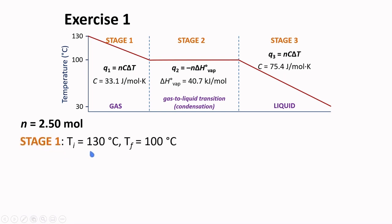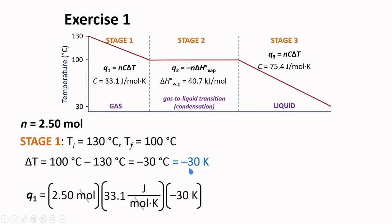For stage 1, we first need to calculate the change in temperature. Given that the initial temperature is 130 degrees Celsius and the final temperature is 100 degrees Celsius, delta T is equal to negative 30 degrees Celsius. The unit, degrees Celsius, needs to be converted to the Kelvin scale for consistency. And in this case, we can have the same numerical value for the change in temperature, negative 30 Kelvin. Logging in these values to the formula and canceling the units, Q1 is equal to negative 2,500 Joules or negative 2.5 kJ.